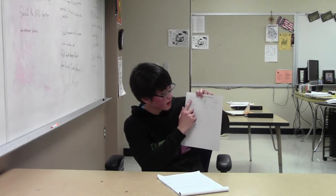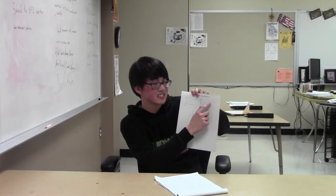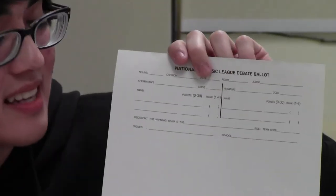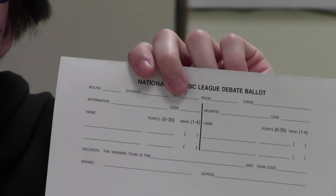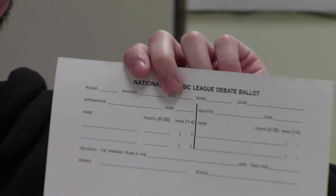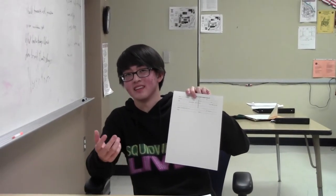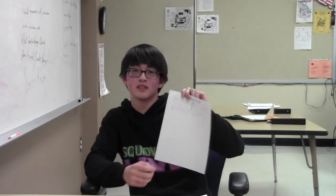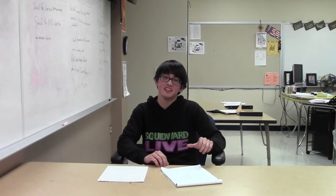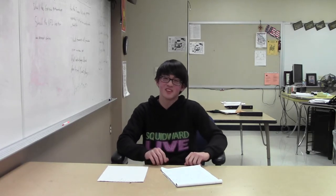Another really important thing on the ballot — under name, there's also a spot that says points, meaning speaker points. There you're going to be giving points to each person from 1 to 30, depending on how well they speak — 30 being the best and 1 being the worst. Most of the time people usually get around 20-something, mid to high 20s, because no one's really that bad or that exceptional at speaking. So give them points based on how well you believe they speak, on a 1 to 30 range.